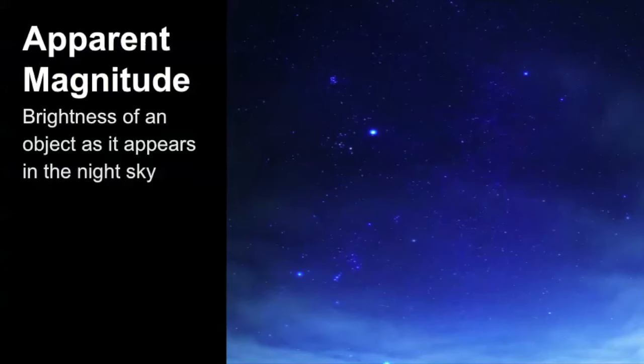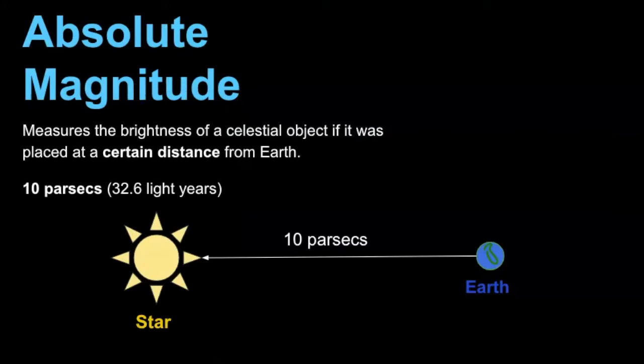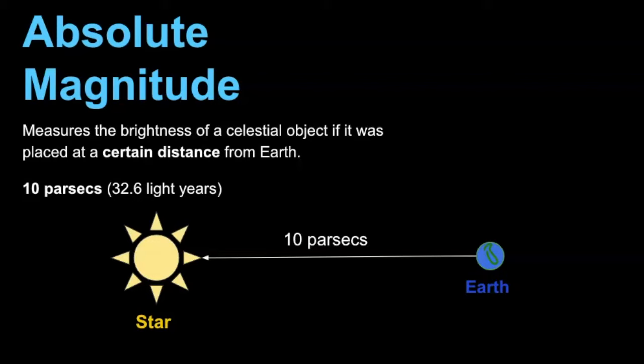So let's start with apparent magnitude. Apparent magnitude is the brightness of an object as it appears to us in the night sky. But there's another type of way to measure magnitude that astronomers use called absolute magnitude. An absolute magnitude measures the brightness of a celestial object if it was placed at a certain distance from Earth. And that determined distance is 10 parsecs, also known as 32.6 light years away.